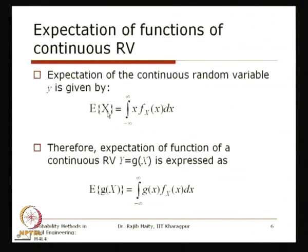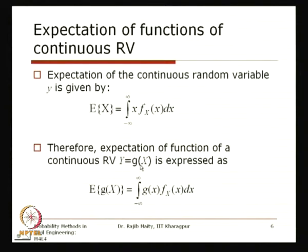For the continuous case, replacing x with the function g(x), the expectation of g(x) equals the integral of g(x) multiplied by f_x(x) dx over the entire support from minus infinity to plus infinity. This gives the expectation of any function of a continuous random variable directly using the original PDF of x.